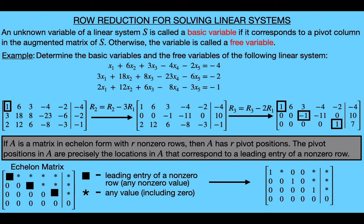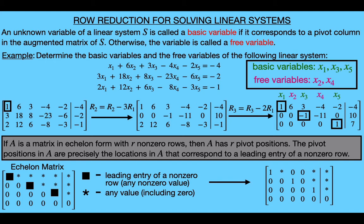So back to our example, since these are the three leading entries for each of our three non-zero rows, we get that these are our three pivot positions. So the first, third, and fifth columns are the three pivot columns. The unknown variables that correspond to the pivot columns are x sub 1 for the first column, x sub 3 for the third column, and x sub 5 for the fifth column. So x sub 1, x sub 3, and x sub 5 are the three basic variables of this system. The other variables that are left are x sub 2 and x sub 4, so these are our two free variables of the system. And with this, we're done because we've determined the basic and free variables.